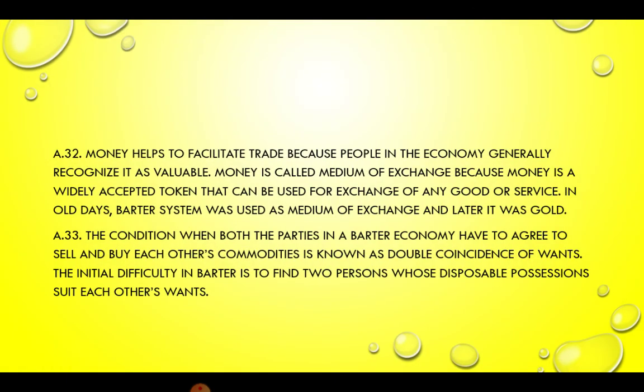Answer 32. Money helps to facilitate trade because people in the economy generally recognize it as valuable. Money is called the medium of exchange because it is a widely accepted token that can be used for exchange of any good or service. In the old days, the barter system was used as a medium of exchange, and later it was gold. Answer 33. The condition when both the parties in a barter system have to agree to sell and buy each other's commodity is known as double coincidence of wants. The initial difficulty in barter is to find two persons whose disposable positions suit each other's wants.